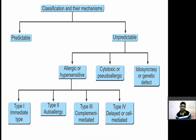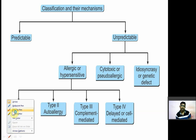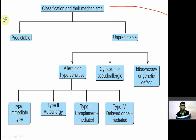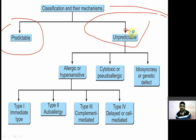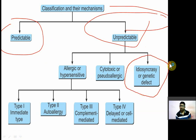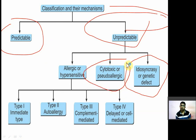The classification of adverse drug reactions by mechanism is very important. Adverse drug reactions are mainly of two types: predictable and unpredictable. Unpredictable adverse drug reactions are more dangerous. Under unpredictable reactions, you may have idiosyncratic reactions, cytotoxic or ferroallergic reactions, and allergic hypersensitivity reactions.